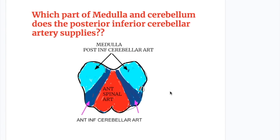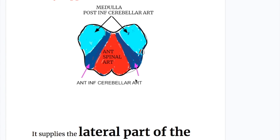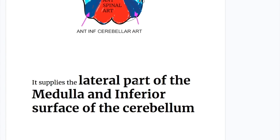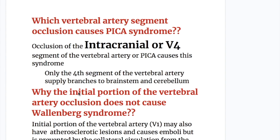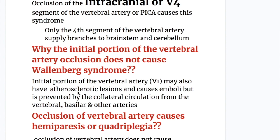Which part of the medulla and cerebellum does the posterior inferior cerebellar artery supply? It supplies the lateral part of the medulla and the inferior surface of the cerebellum. Occlusion of the intracranial or V4 — the last segment — of the vertebral artery or posterior inferior cerebellar artery causes Wallenberg syndrome. Only the fourth segment of the vertebral artery supplies branches to the brainstem and cerebellum.